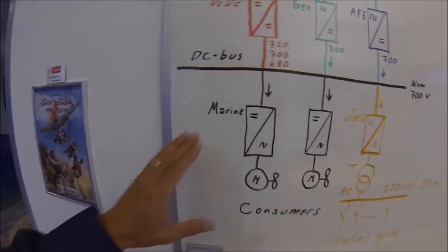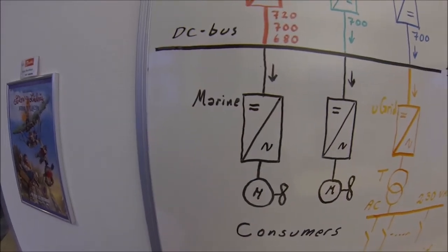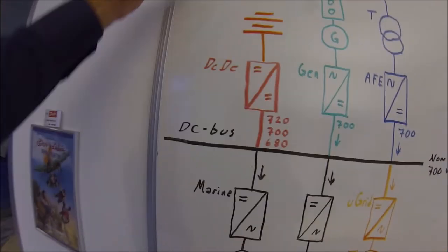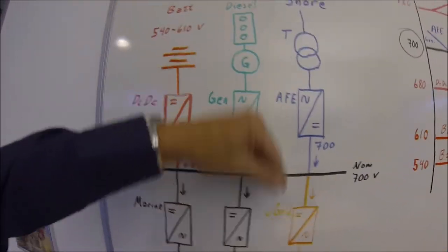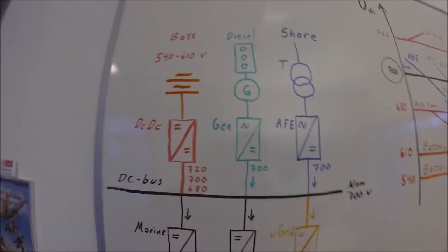When we are planning the load share on this DC bus, the consumers are pretty easy. They will be happy with any voltage between 600 volt and 800 volt they get. However, the energy sources into the system need to be some kind of synchronized to be load shared.